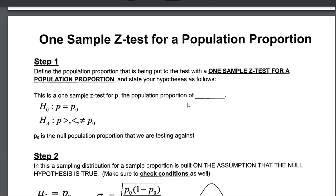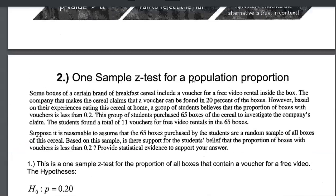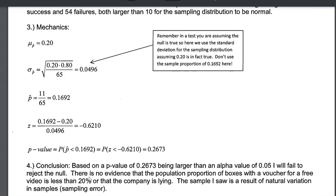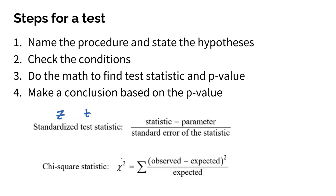Here's the next one, a one sample Z test for population proportion. Again, a page of directions, and then a page of an example with all of the work shown. So I have this for all of the different procedures that you could possibly be asked on the AP statistics exam.